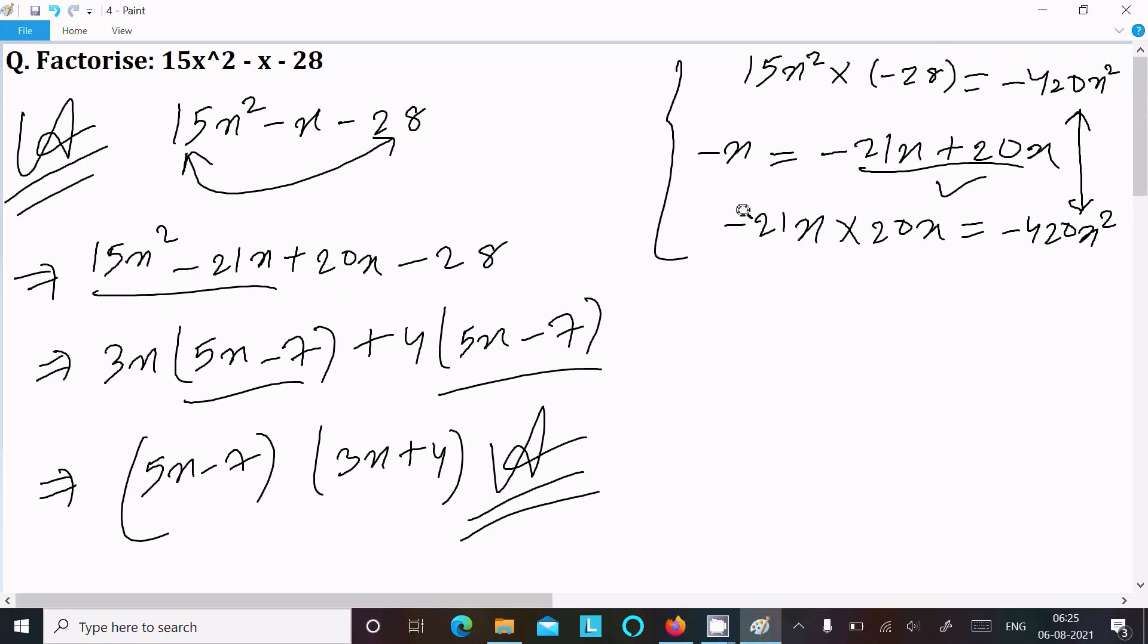So first multiply first term with the last term, you get -420x². Take the middle term. Middle term you should break into two parts when subtract it equals -x and when multiply it equals -420x². If condition satisfy then you should take the combination. This condition satisfy, so I can take. So this is the way we can do the factorization of this equation.